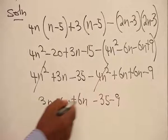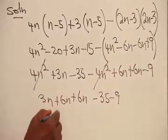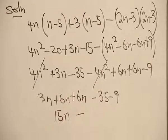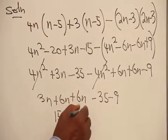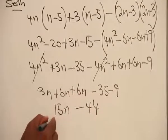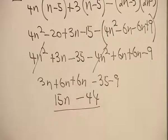In this order, adding this together, 3 plus 6 plus 6, that is 15n and then minus. Adding this together, you will have 44. So the final result in this case is 15n minus 44.